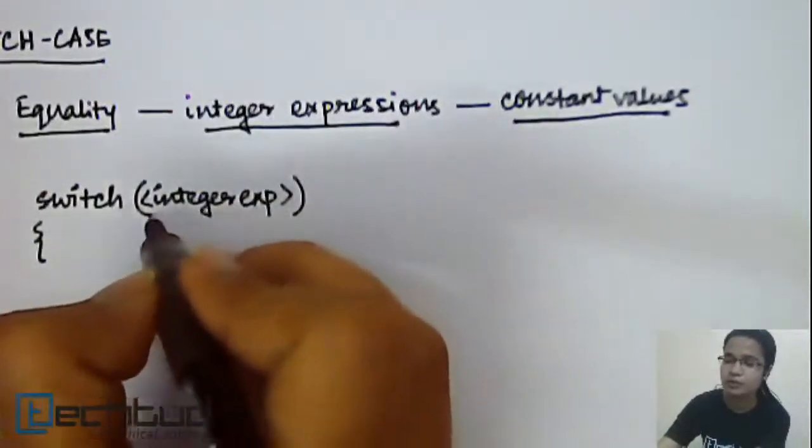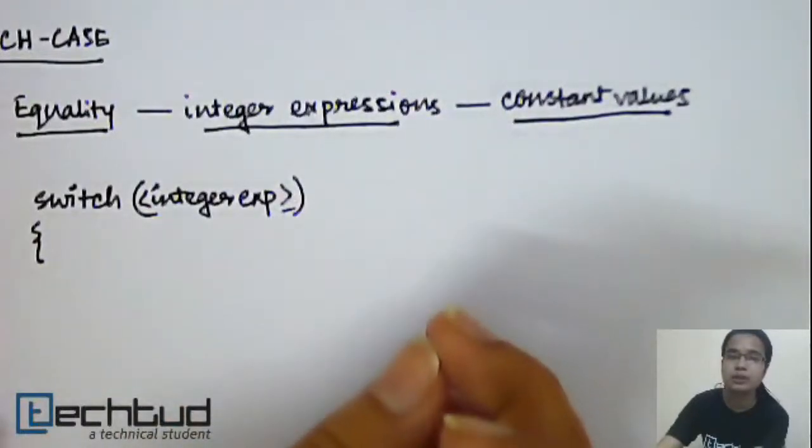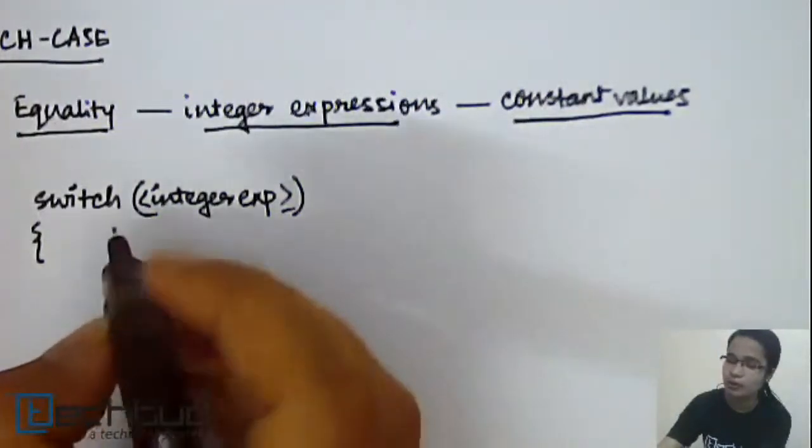So you don't need to give this tag sign. You just need to replace this whole thing with the particular integer expression. We want to find the equality.